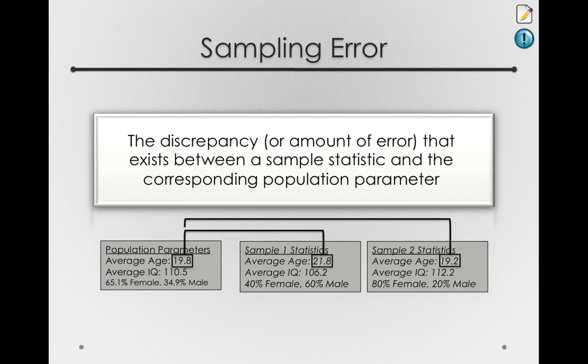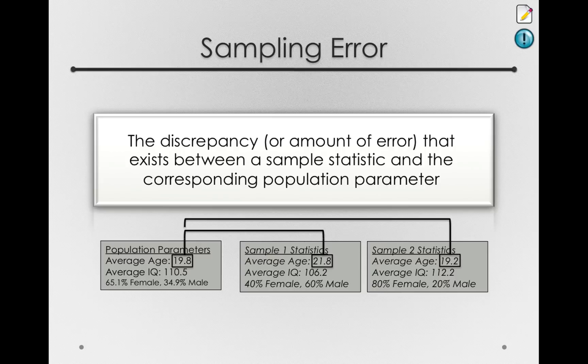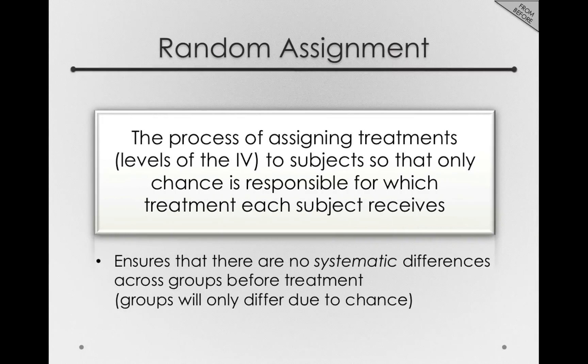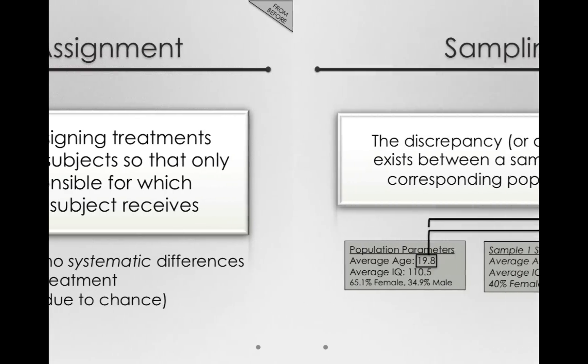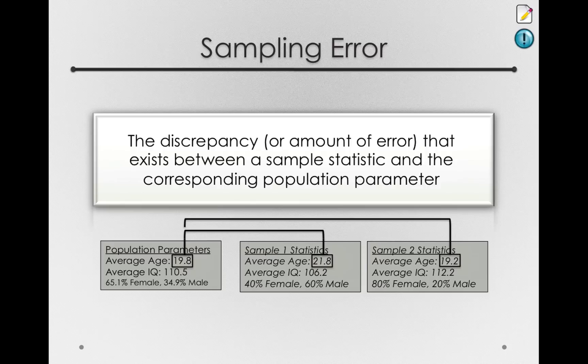Now, this discrepancy is due to chance alone, and chance will be something that we will be able to understand or grapple with via probability. And remember, we already saw a situation where chance alone was causing discrepancies between different statistics. This was actually when random assignment was used. Remember, we said that it ensured that there are no systematic differences across groups before treatment, and I told you that groups will differ due to chance. Now, this chance difference is going to be sampling error, and that difference or discrepancy between the samples will be totally due to sampling error. And sampling error will be something that we will be able to quantify and understand.